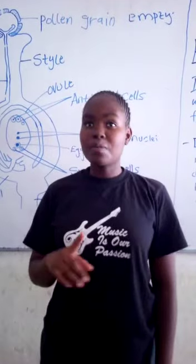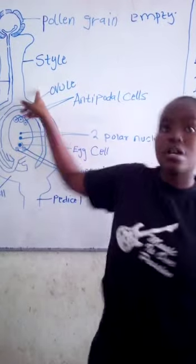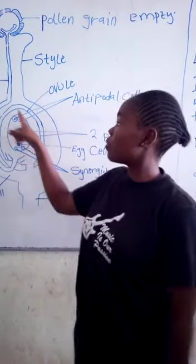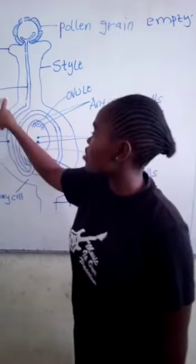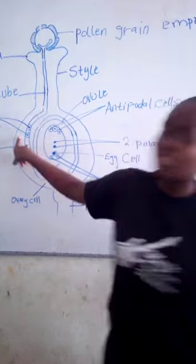The pollen tube extends through the stigma and style, pushing its way through and getting nutrients from the transmitting tissues.